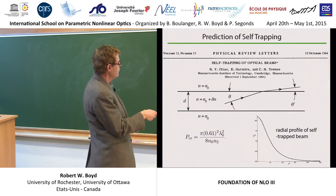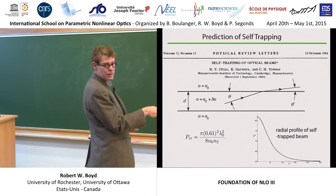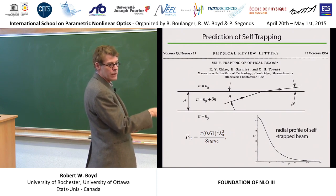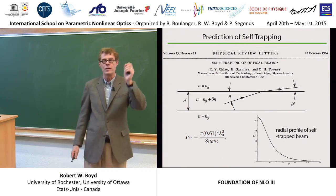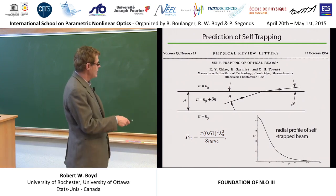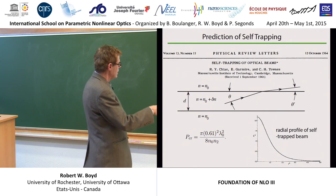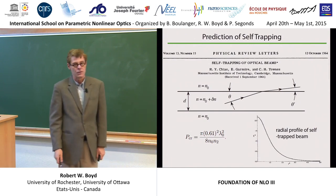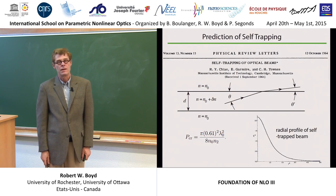As drawn, this ray of light is not trapped in the filament. But if we make delta N a little bit larger, then this ray of light would undergo total internal reflection. So you need this picture and Snell's law, and that's all it takes. What you find is that the critical power for self-focusing is given by this expression. You can take this model and also calculate the radial profile of a self-trapped beam, and you get something that looks like this. Some people call this the Townes profile. It does not have an analytic solution — it's not a Gaussian, but it looks a whole lot like a Gaussian.